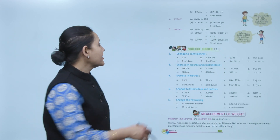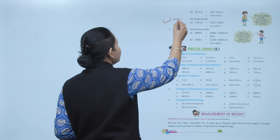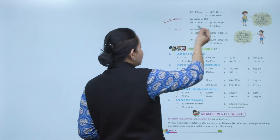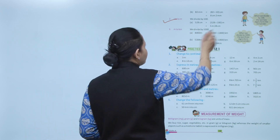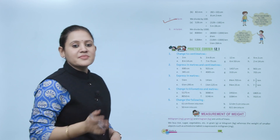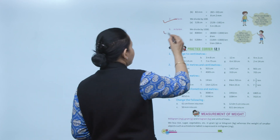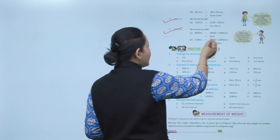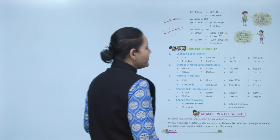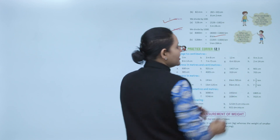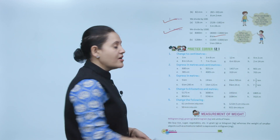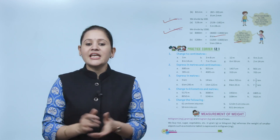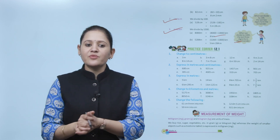Next is centimeter to meter: divide by 100. So 528 centimeters equals 5 meters 28 centimeters. Next is meter to kilometer: divide by 1000. So 8000 meters equals 8 kilometers. When we divide by 100, the last two digits form the remainder. When we divide by 1000, the last three digits form the remainder. Next is Practice Corner 12.1.